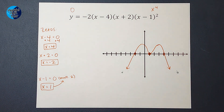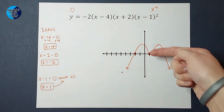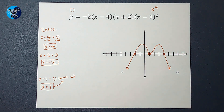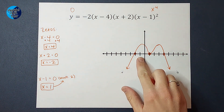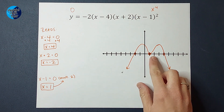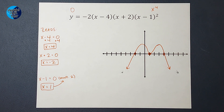Now, you might remember I said there was an optional fourth step. That optional step is to plug in some other points because we don't know exactly how high those bumps go — that's why I didn't put tick marks on the y-axis. Your teacher may just want a general graph like this, but if they want to know where some of those bump points are, you can plug in points like negative 1, 0, 2, and 3 to figure out how high those bumps actually are. I hope this made sense — if you need more examples, I'll link a playlist for you.